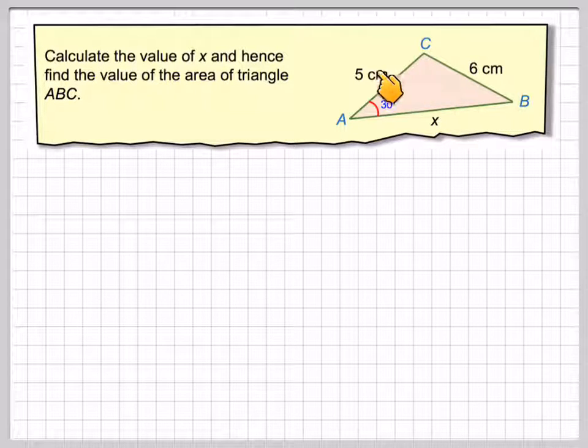We could use the sine rule by finding that angle, using that one, and then find that angle, and then find that side opposite c here. Or we could use the cosine rule straight away. So I'm going to use the cosine rule here.